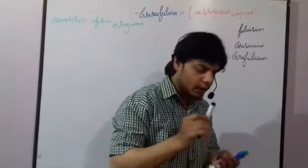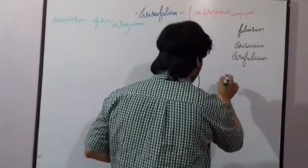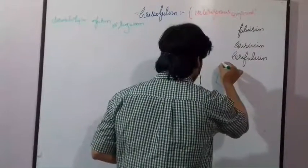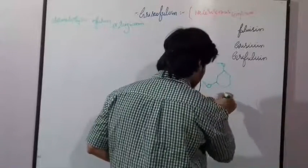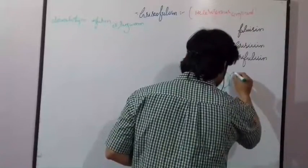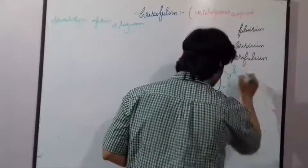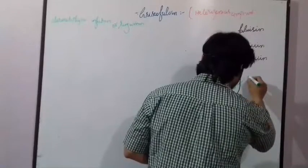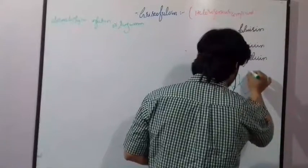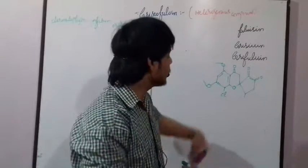Now, how do these drugs look and what is the structure of these drugs? If we see the structure of this drug, it will look like this form. This is the structure of Griseofulvin.